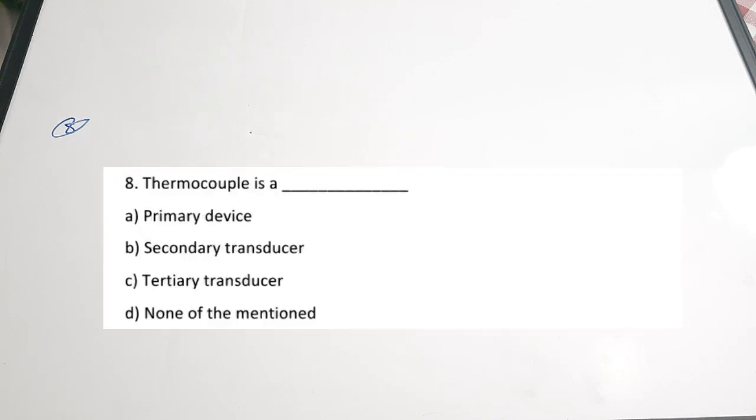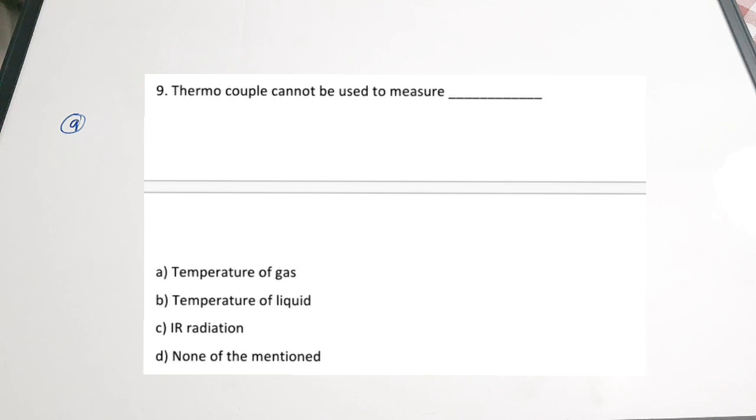Question 8: thermocouple is a — A primary device, B secondary transducer, C tertiary transducer, D none of the mentioned. Correct answer is A — thermocouple is an active transducer; it is a primary device. Question 9: thermocouple cannot be used to measure — A temperature of gas, B temperature of liquid, C IR radiation, D none of the mentioned. Correct answer is D, none of the mentioned — you can actually measure all of these things with a thermocouple.